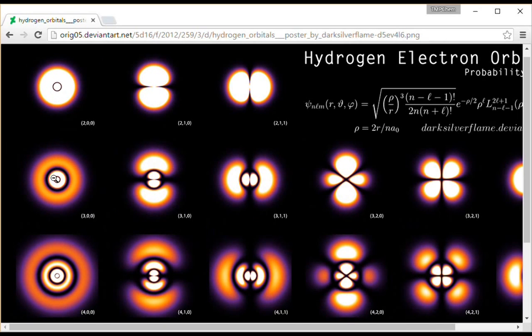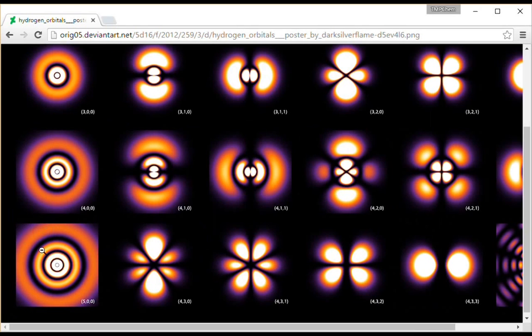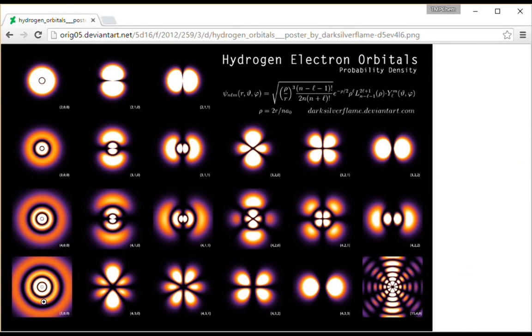For 3S, we see the two radial nodes. 4S has 3, 5S has 4, so we can see that trend.